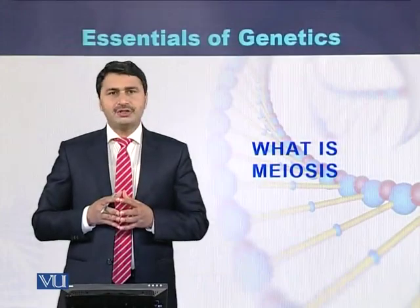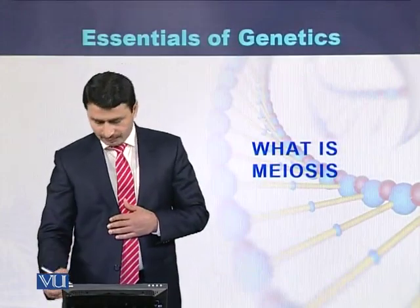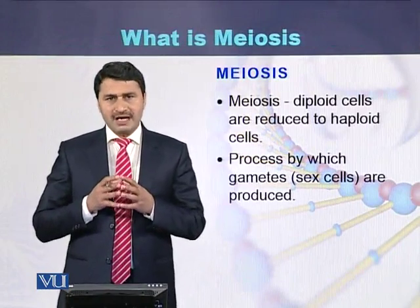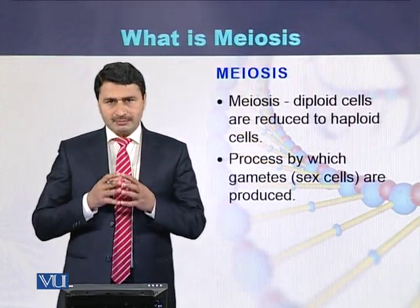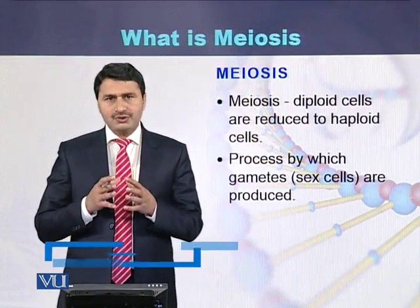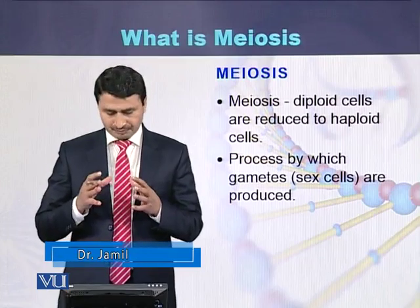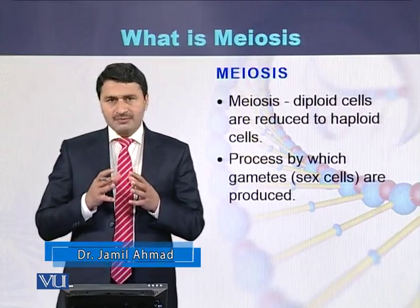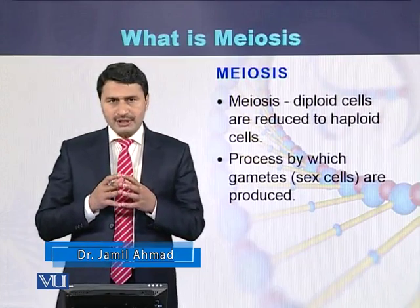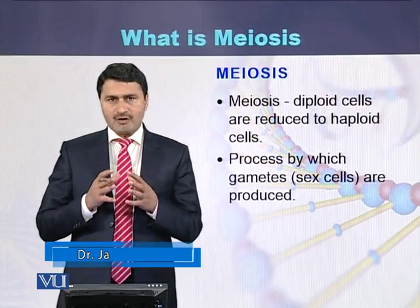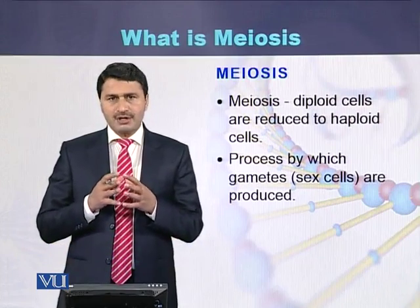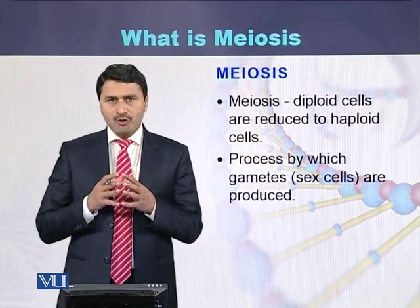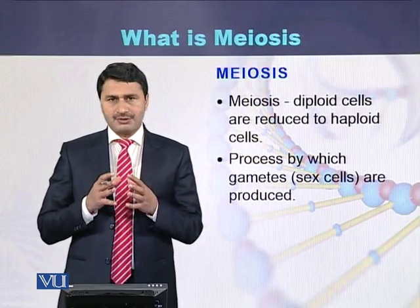What is meiosis? Meiosis is a process by which diploid cells are reduced to haploid cells. It is a process by which gametes are produced. In the case of males, sperms are produced, while in the case of females, ova or eggs are produced.